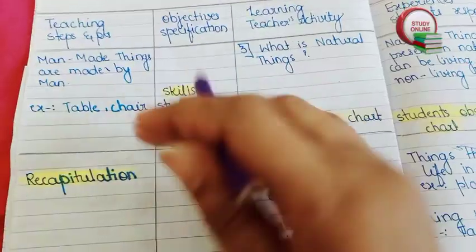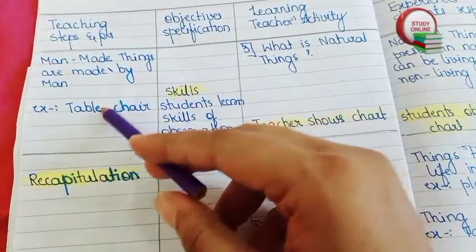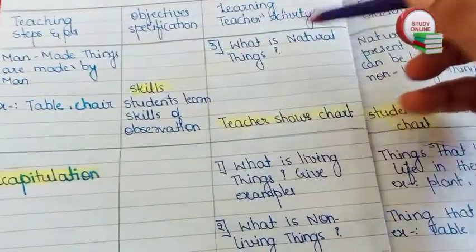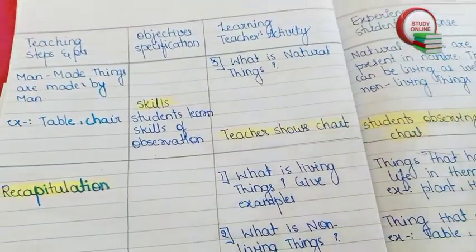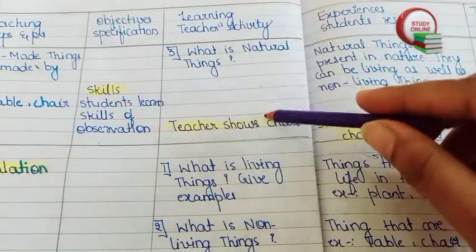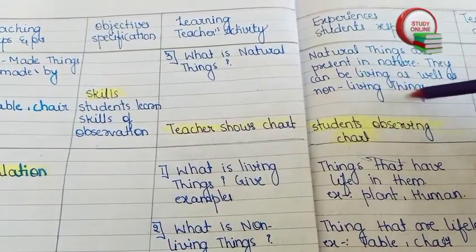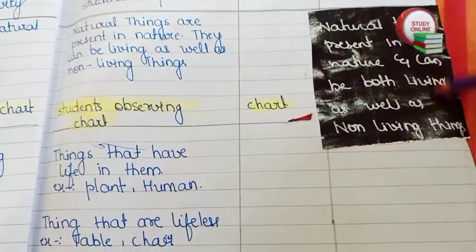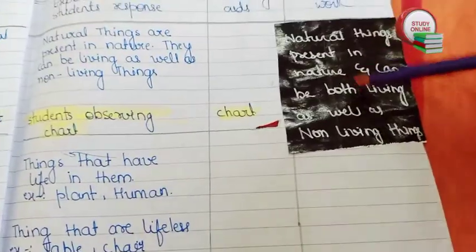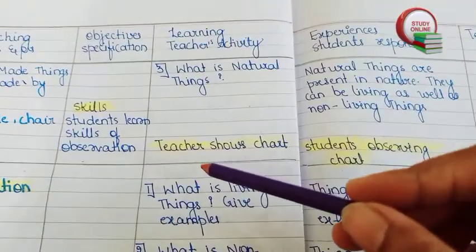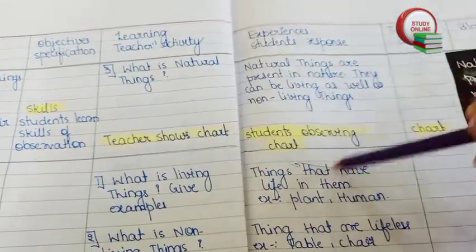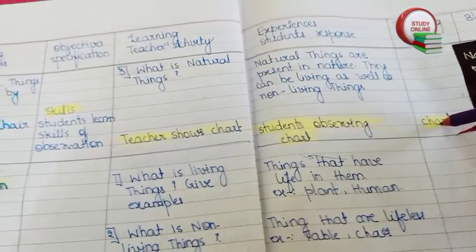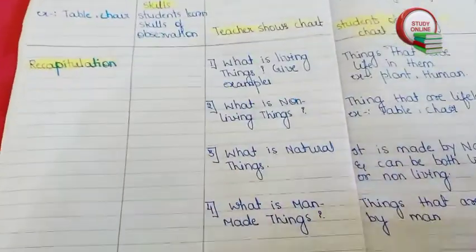Here you can see the rest part of Presentation 2 — man-made things: what are man-made things and their examples. This is the rest of the questions, the third question, and here are the expected answers we expect from students. Here you can see all the natural things and examples of natural things. The teacher shows a chart and students observe it. For teaching aids we write 'chart.'